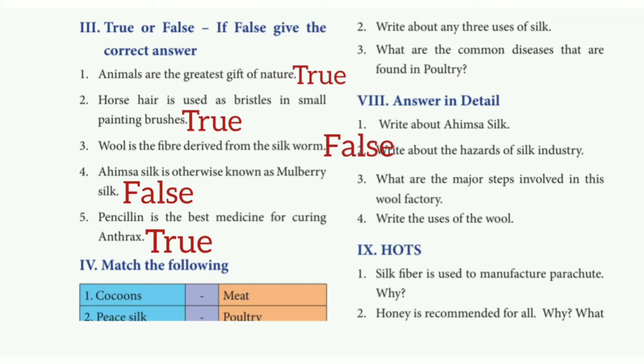Fourth one: Ahimsa silk is otherwise known as mulberry silk — the answer is false. Fifth one: penicillin is the best medicine for curing anthrax — the answer is true.